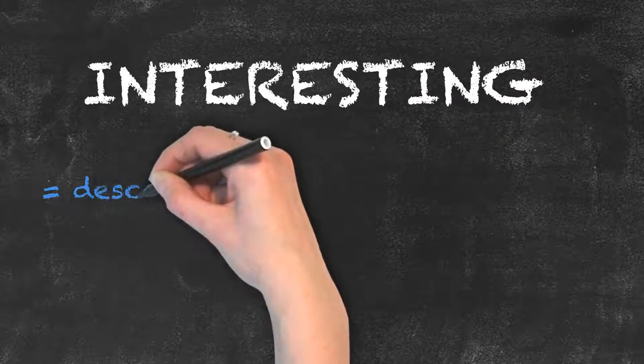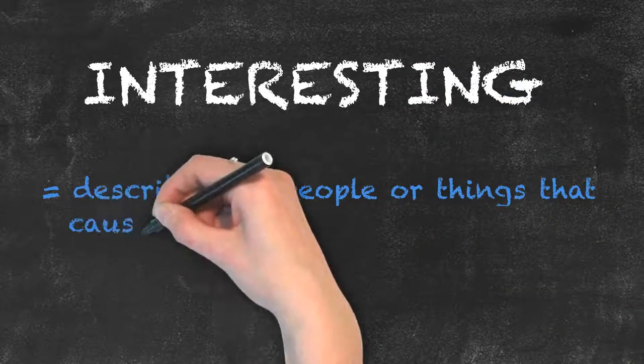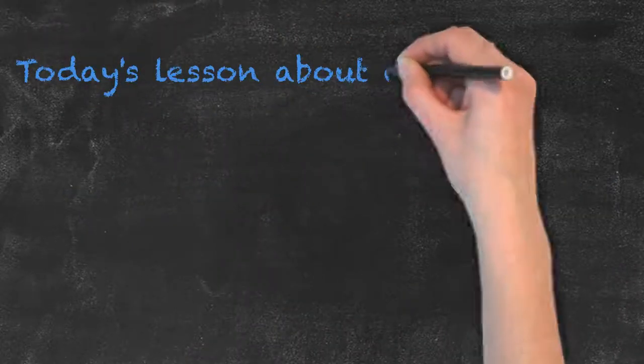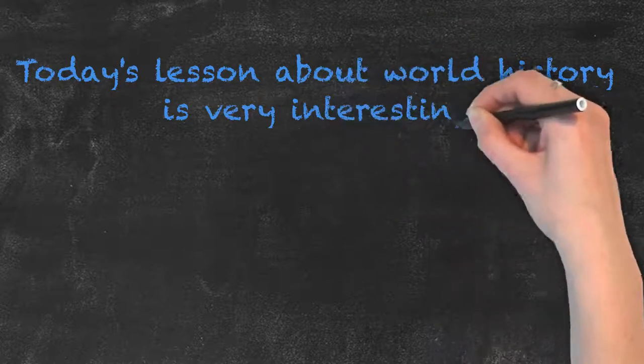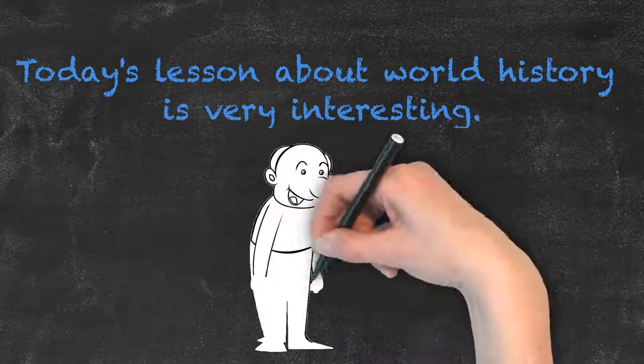The word interesting is a present participle. When used as an adjective, it describes the people or things that cause the feeling of interest to someone. For example, today's lesson about world history is very interesting. World history is causing the speaker a feeling of interest.